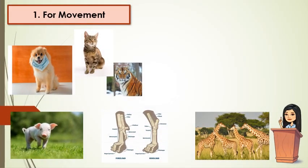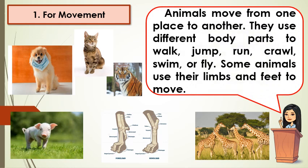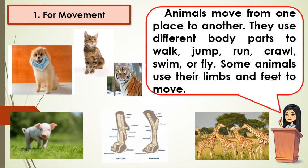The first function of these body parts is for their movement. Animals move from one place to another. They use their different body parts to walk, jump, run, crawl, swim, or fly. Some animals use their limbs and feet to move.